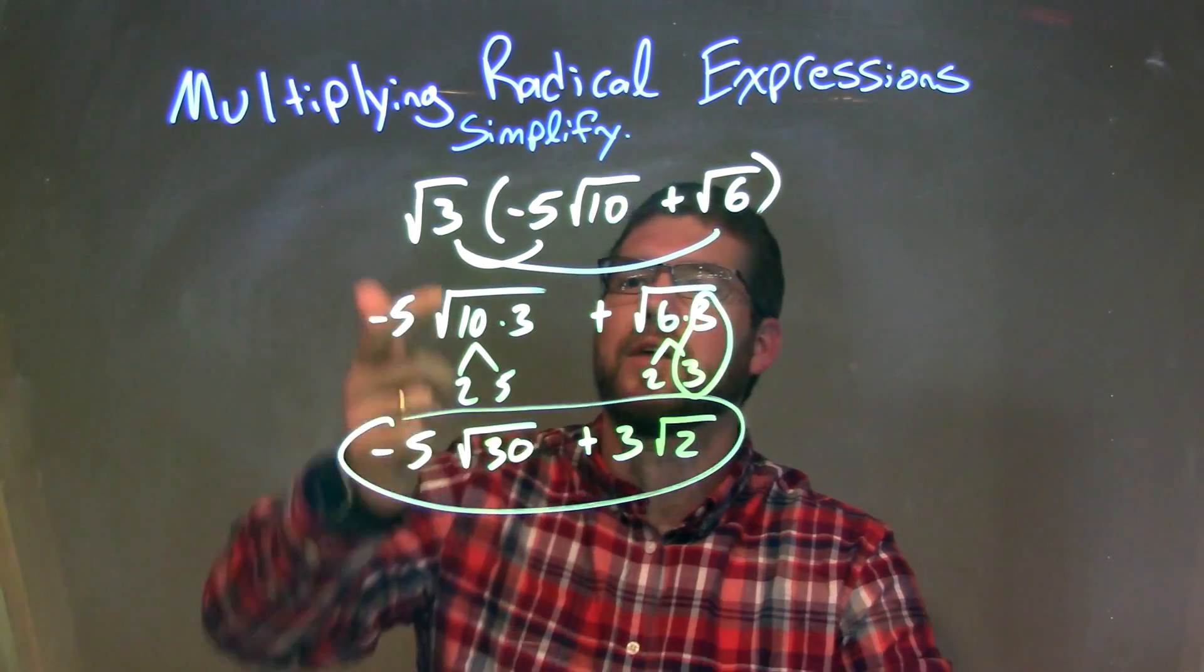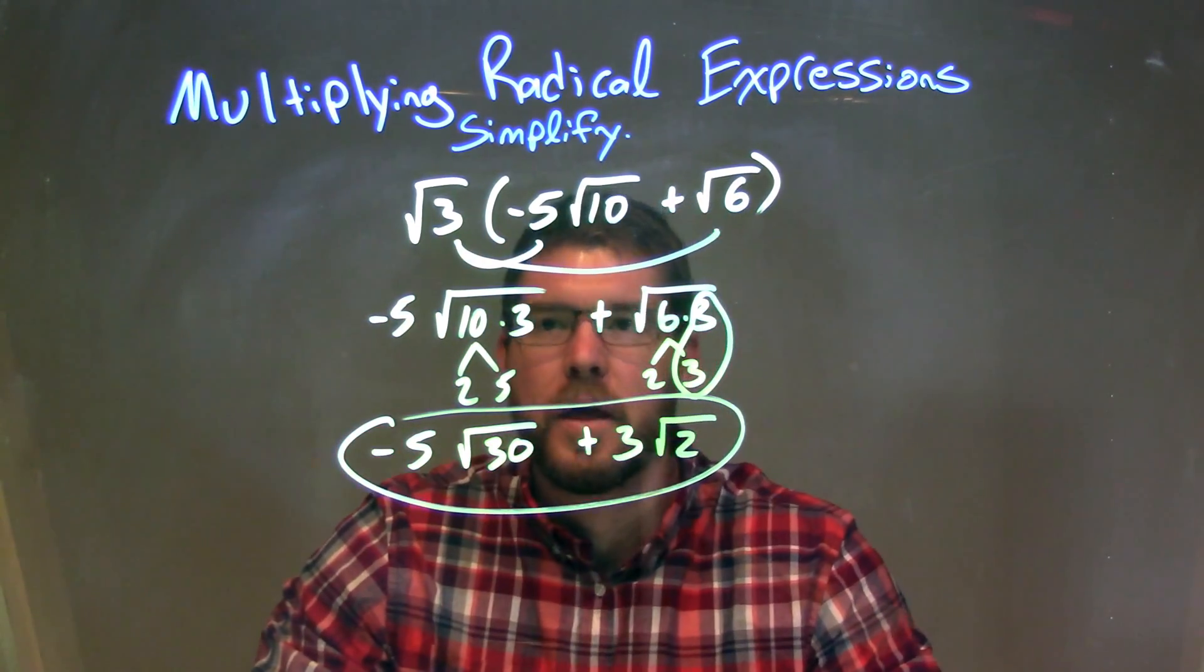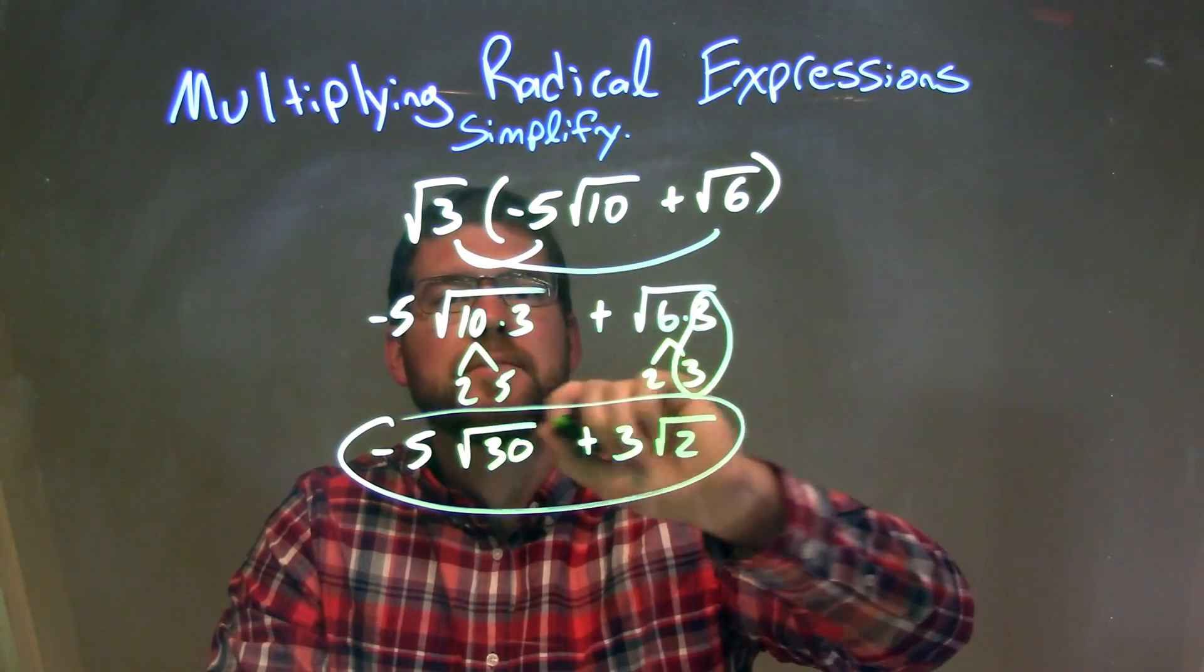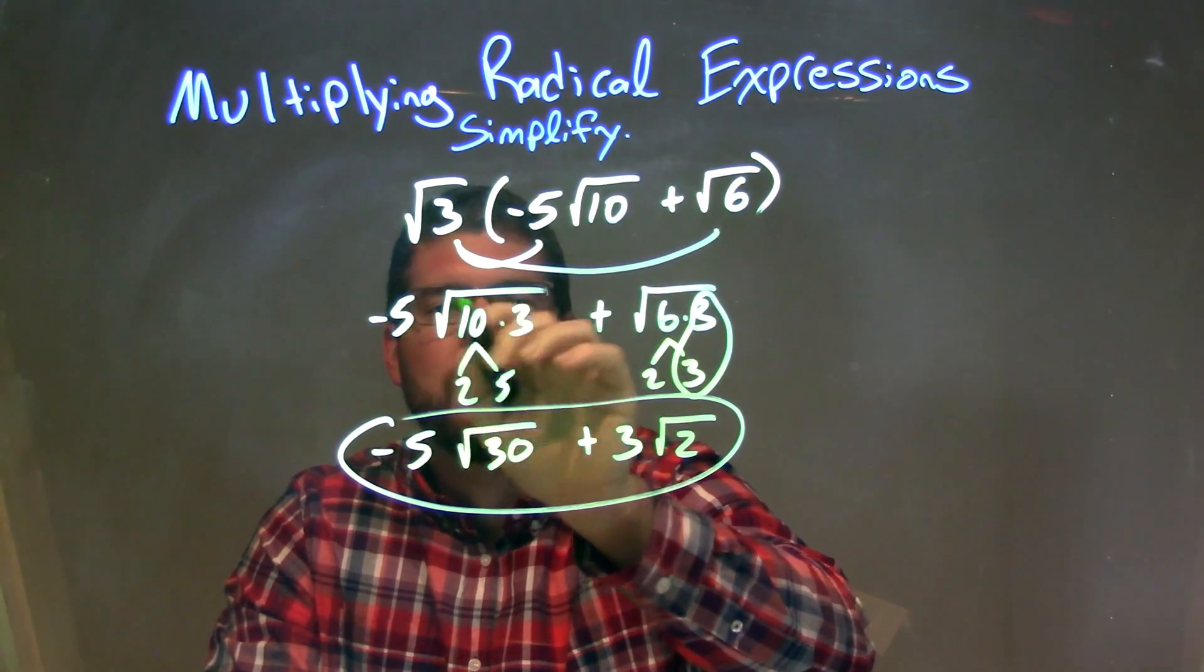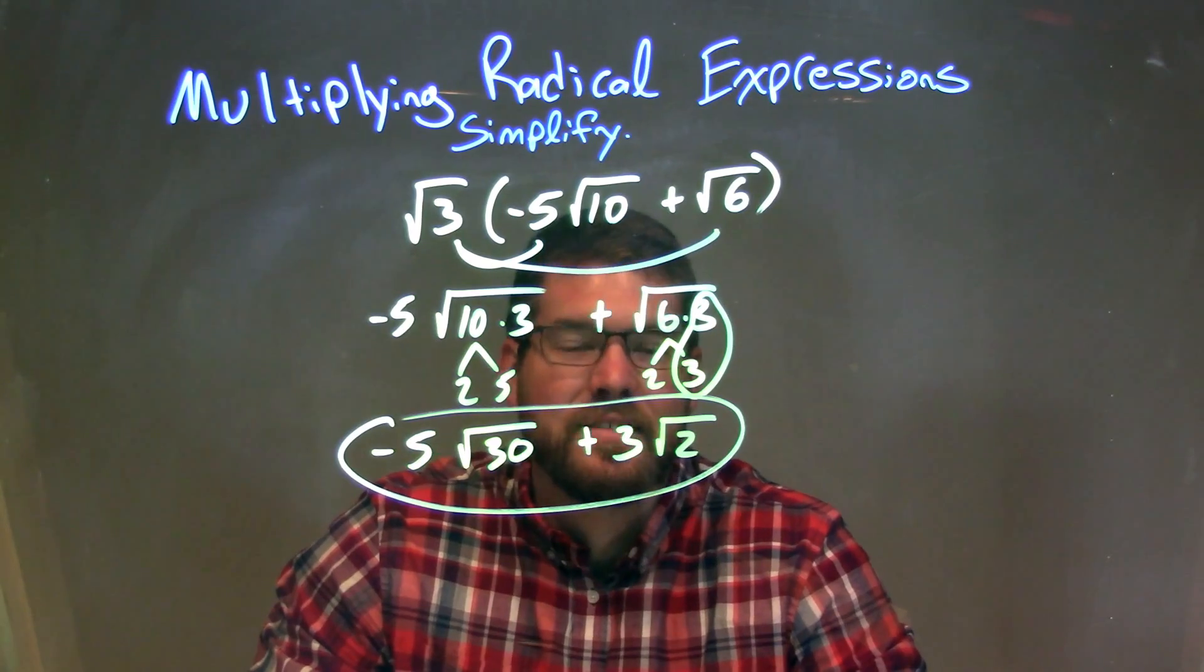As a recap, we're given the square root of 3 times the square root of 10 plus the square root of 6. From there, I multiply across. The square root of 3 distributes to both parts, and we're left with negative 5 times the square root of 10 times 3 plus the square root of 6 times 3.